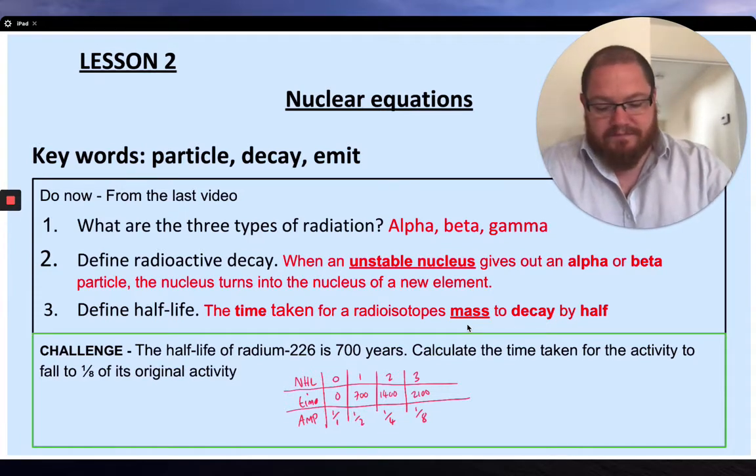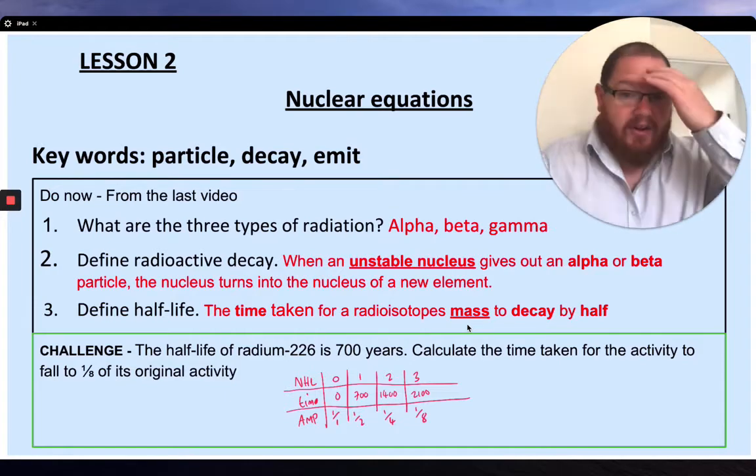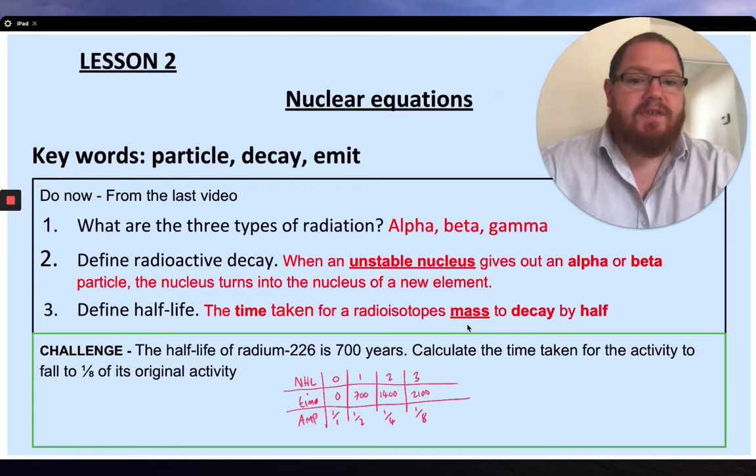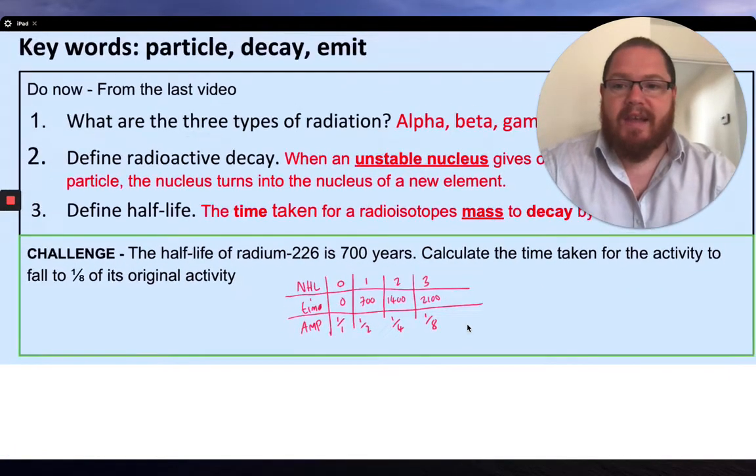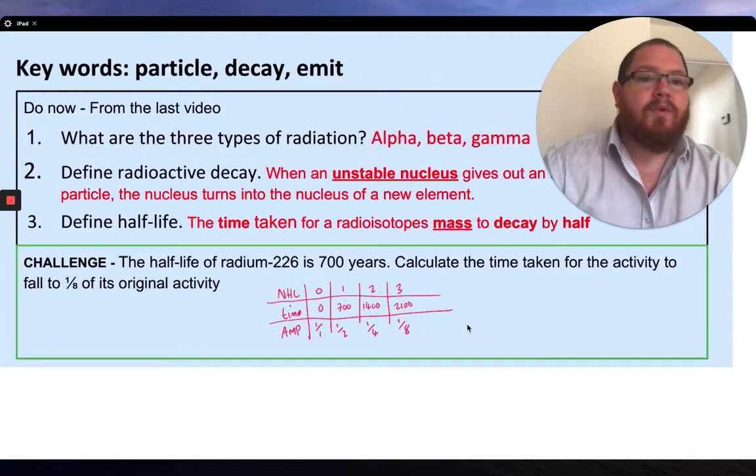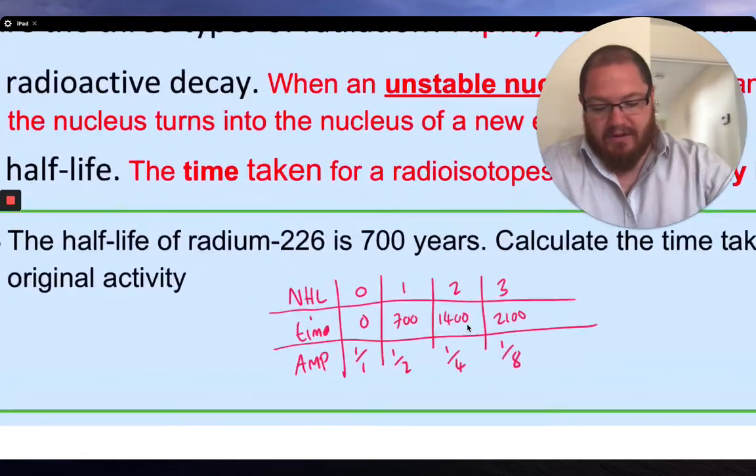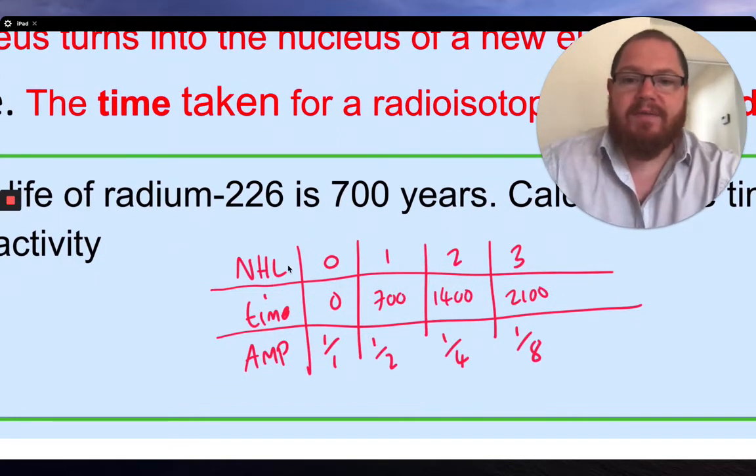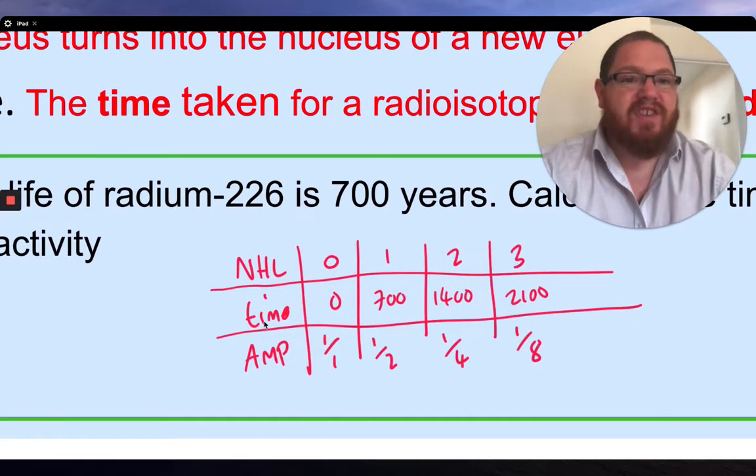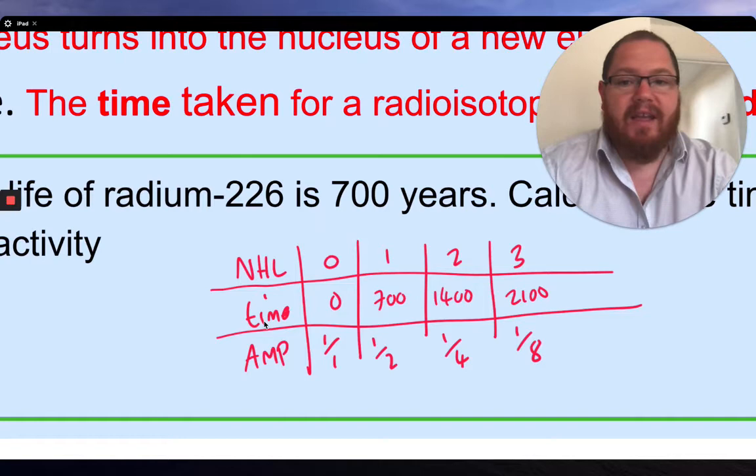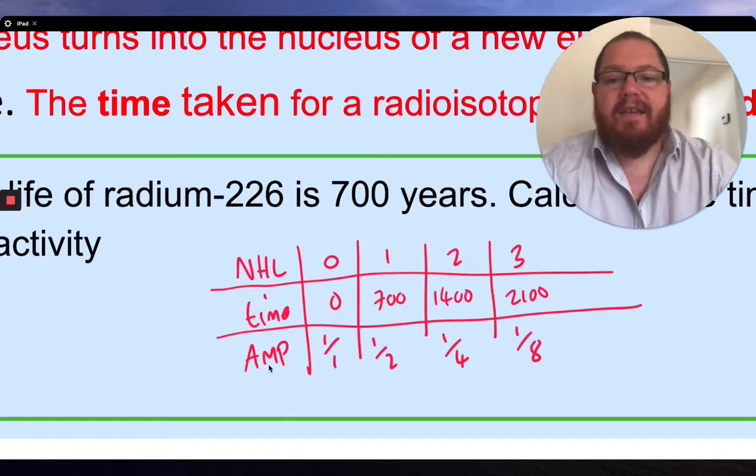Use your challenge. It says there, it's got a half-life of 700 years. Calculate the time taken for the activity to fall to an eighth. So we've got NHL, number of half-lives. We've got time, which is the half-life, how long it takes to decay. Activity, mass, or percentage for your amp.